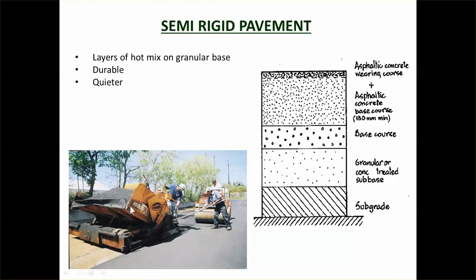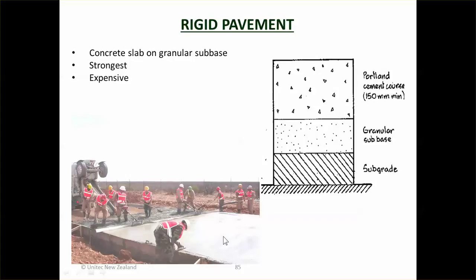For semi-rigid pavement, you can see a paving machine here — this is probably just a surface layer. Trucks come along with the hot mix, tip it into the hopper, and the machine lays it as it goes. You can see a roller there rolling it as they go. For rigid pavement it's basically a concrete slab pouring operation — they've got formwork, some have a moving form. They dump concrete out of a truck and workers screed and shape it as they go.